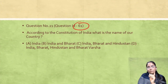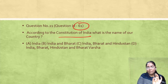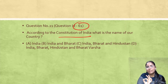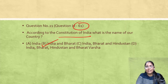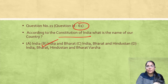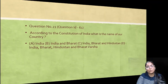Question ID 61: According to the Indian Constitution, what is the name of our country? The options include India and Bharat, India and Hindustan, Hindustan and Bharat, and Bharat Varsh. The predictable and correct answer is India and Bharat — both names are acceptable and written in the Indian Constitution. India, that is Bharat, the union of states.